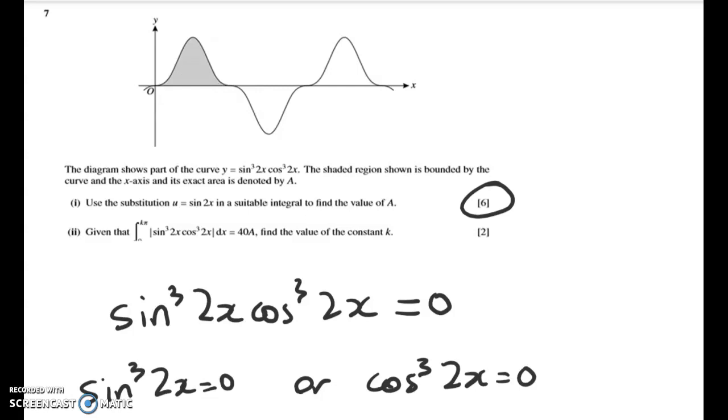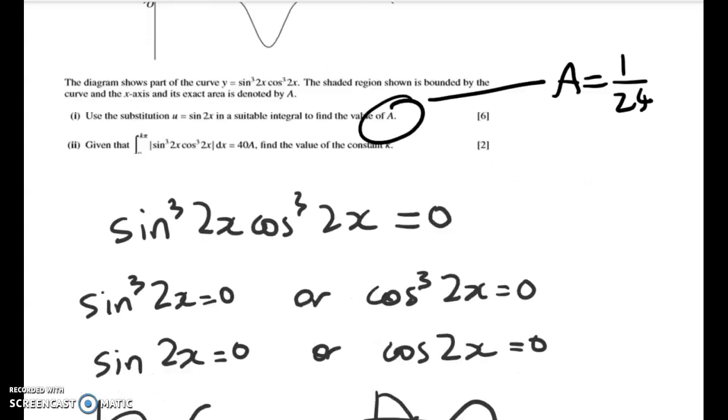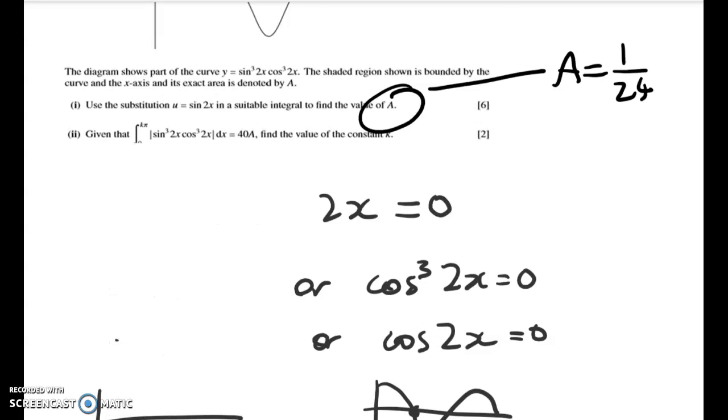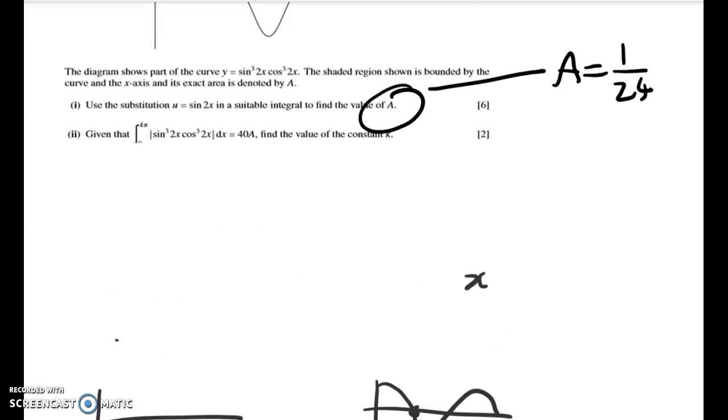So we've found the shaded area, and the shaded area has a value of 1 over 24. The next thing we're told is, given that this next integral, which is the integral between 0 and k pi, so we've got k pi here and 0 here, times the absolute value of the function, we're told that that's equal to 40a.